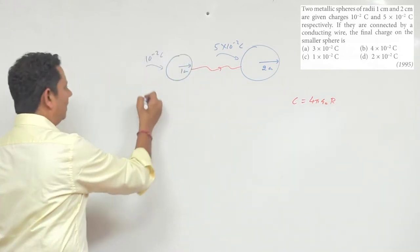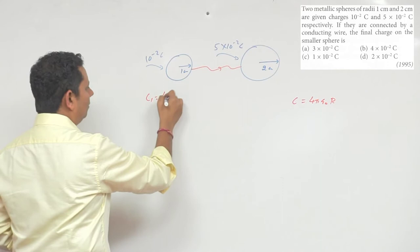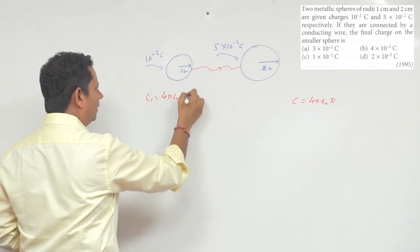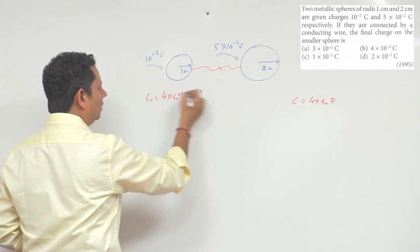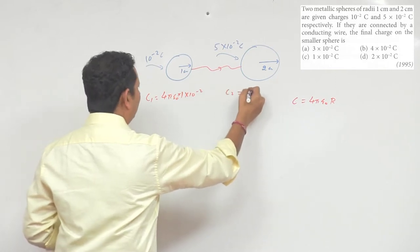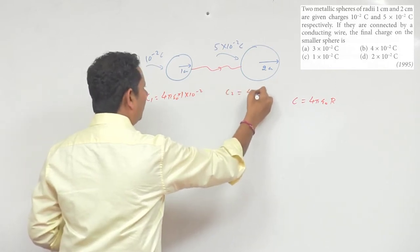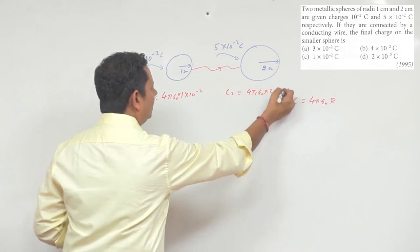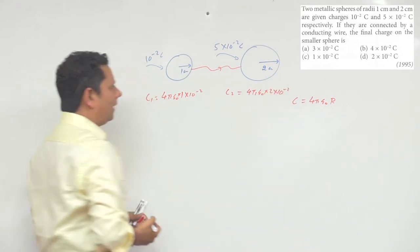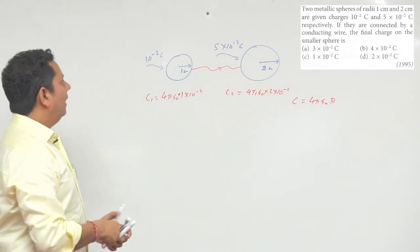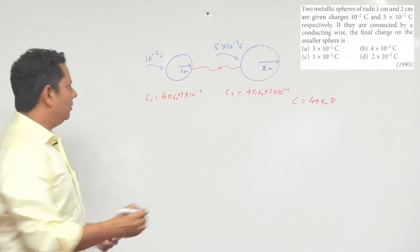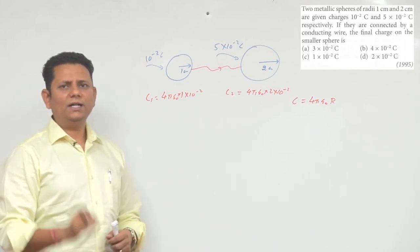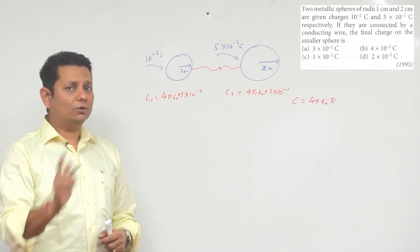So for these two spheres, capacitance C1 is 4 pi epsilon-not multiplied by 10 to the power minus 2, and C2 is 4 pi epsilon-not multiplied by 2 into 10 to the power minus 2. When both are connected, the charge will redistribute so that both have the same potential.